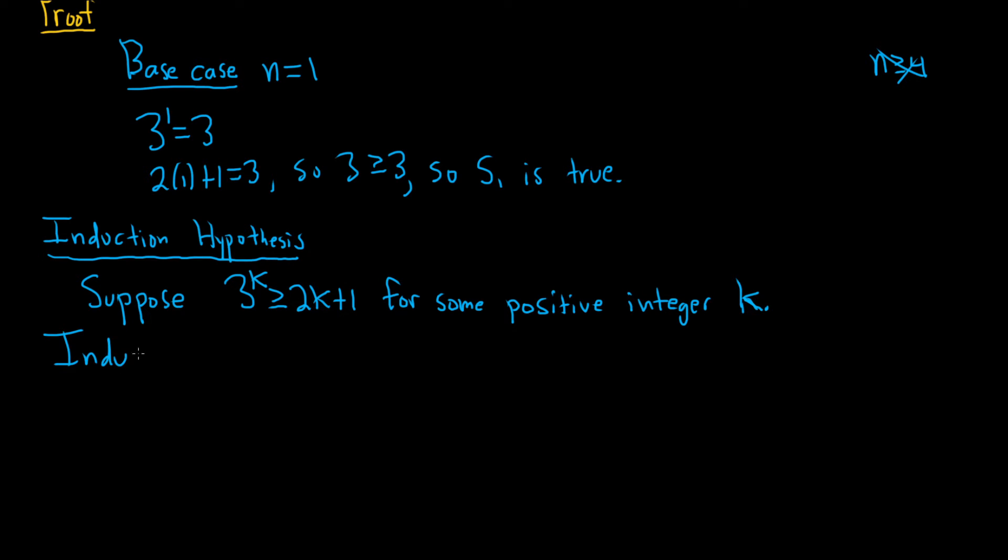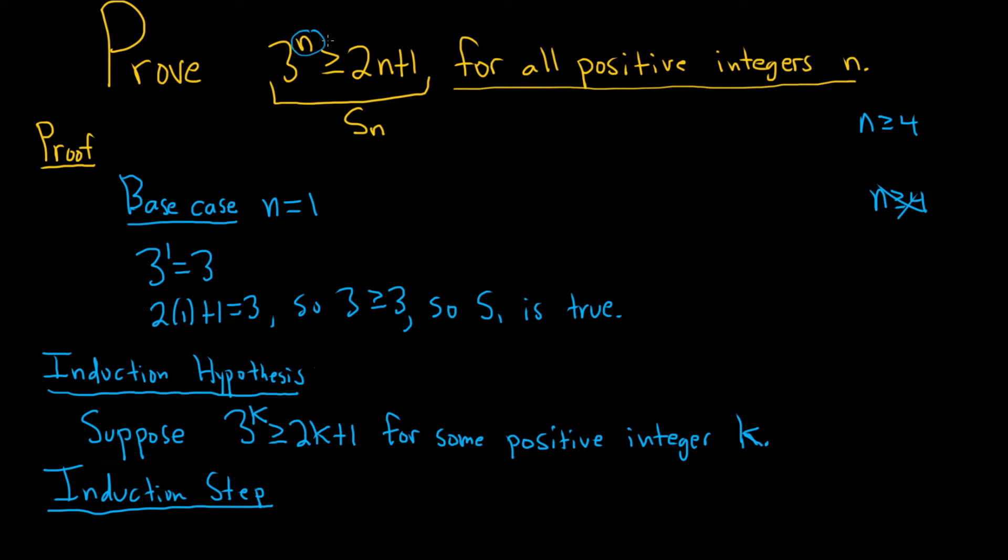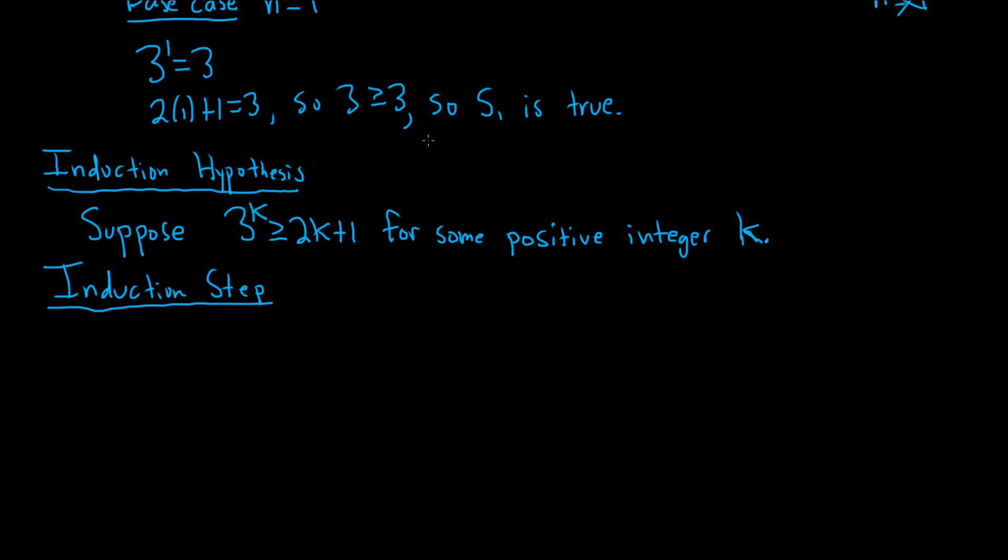This is where we have to show that our statement is true for n equals k plus 1. So we need to show it's true whenever we replace this n with k plus 1. So typically what you do is you write down what you need to show. So we need to show that 3 to the k plus 1 is greater than 2 times k plus 1 plus 1. Now it's really important that you don't just write this down. You have to write down we need to show. I'm going to even put this in parentheses to kind of indicate that this is not really part of the proof.